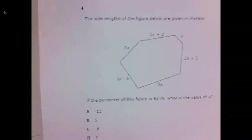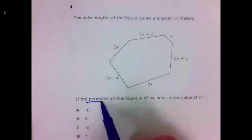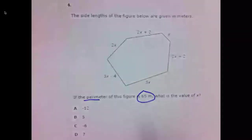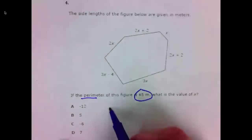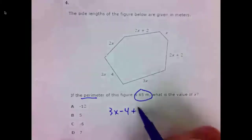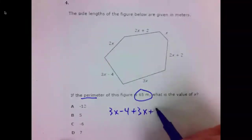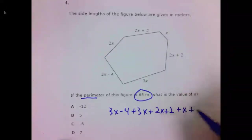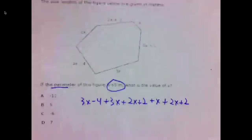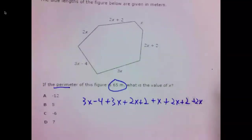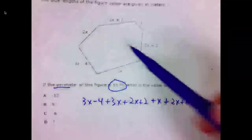Number four. We are looking for the perimeter. It tells us it's 65. Well, the perimeter is the sum of all the sides. So I'm simply going to add up all these sides. Three X minus four. Three X. Plus two X. Plus two. Plus X. Plus two X plus two. Plus two X.